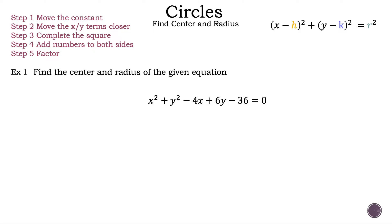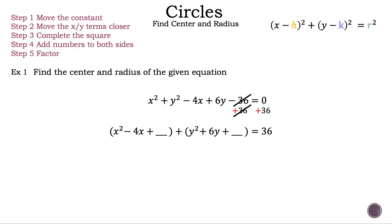Now let's reread the equation: x squared plus y squared minus 4x plus 6y minus 36 is equal to zero. Our first step is to move that constant negative 36 to the other side. So let's add 36 to the left-hand side — those numbers cancel — and now we need to add 36 to the right-hand side. This is the reason we move the constant to the opposite side: so we can have all the variables on one side. We have also moved the xy terms closer together and put parentheses around them so we can see what is happening a little bit easier.